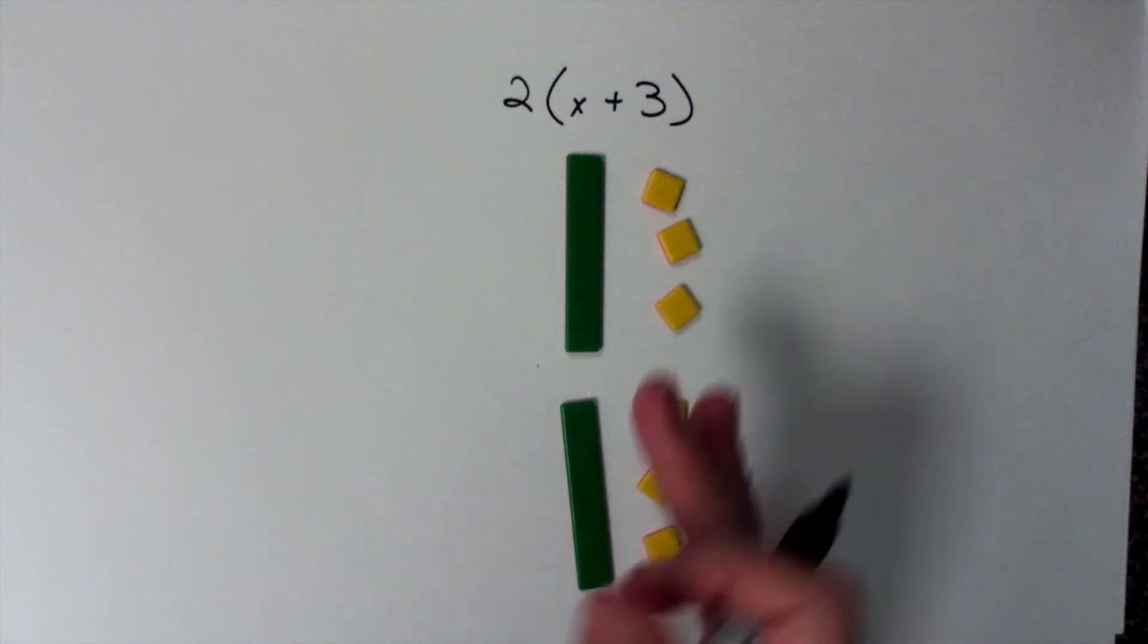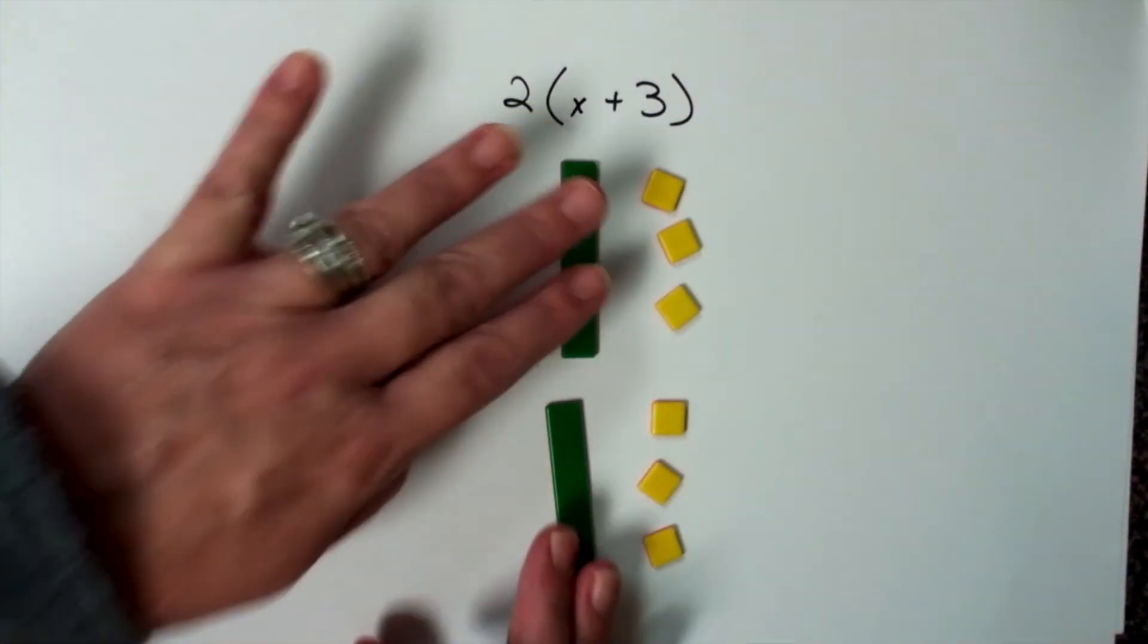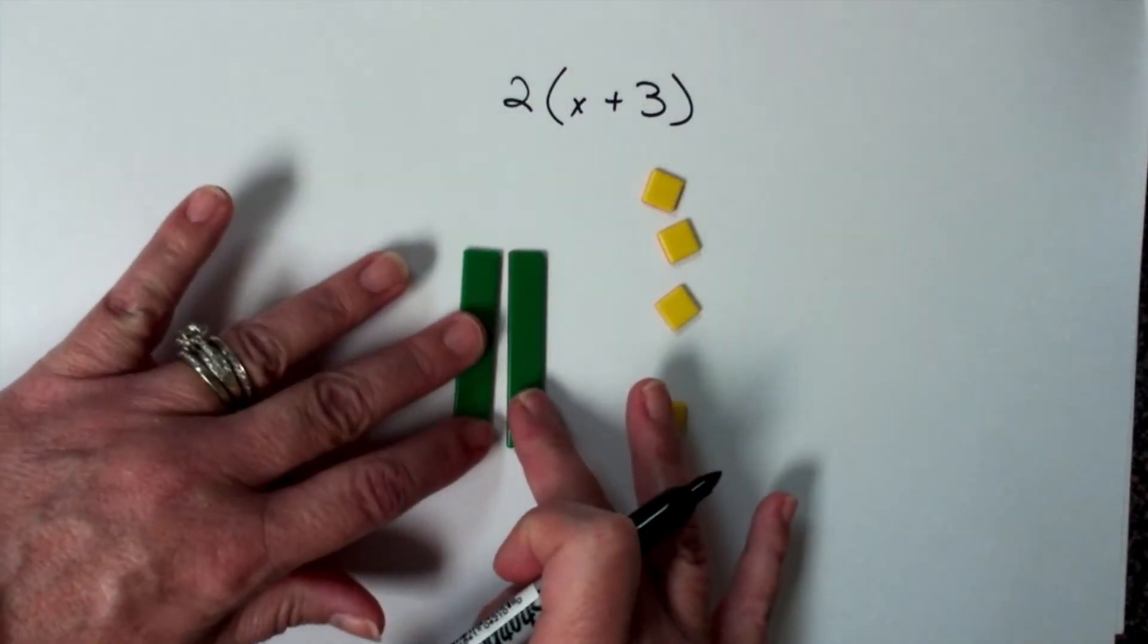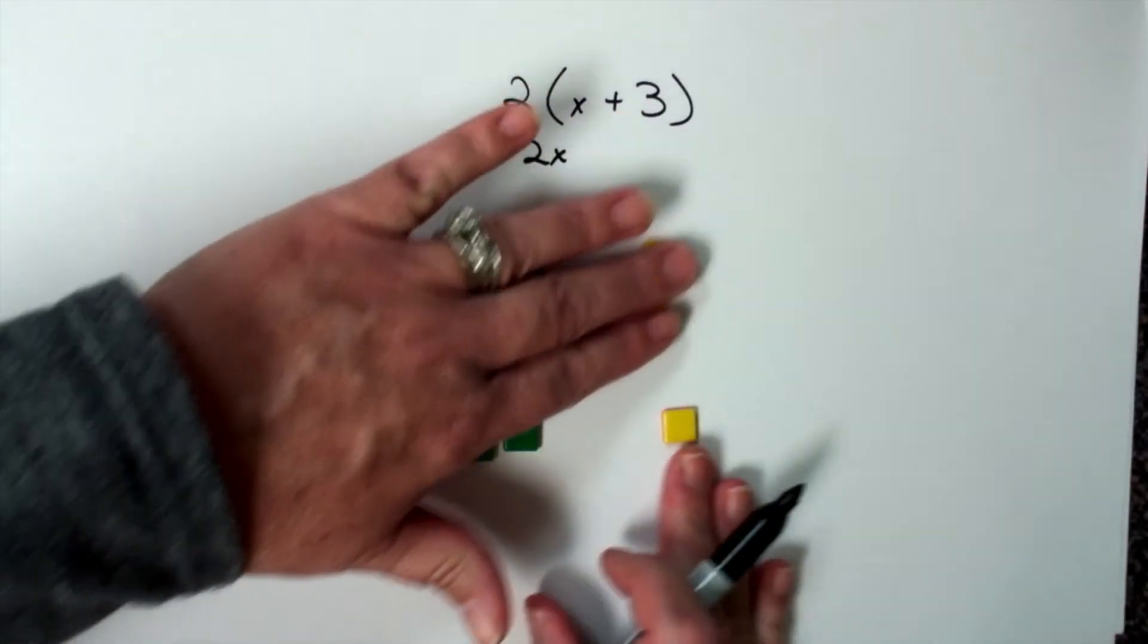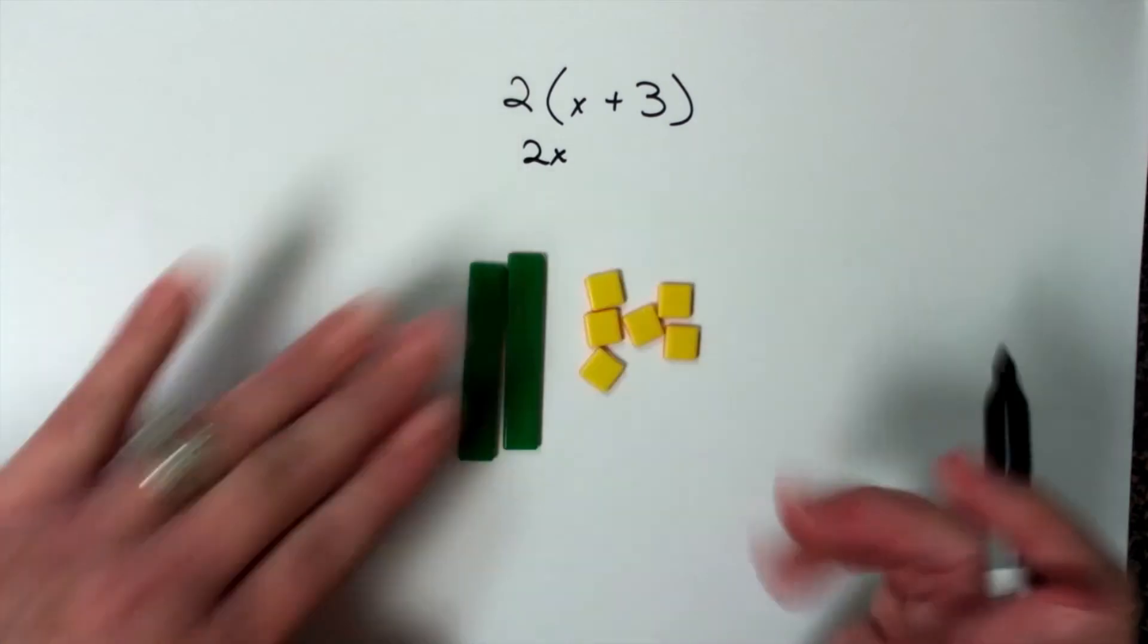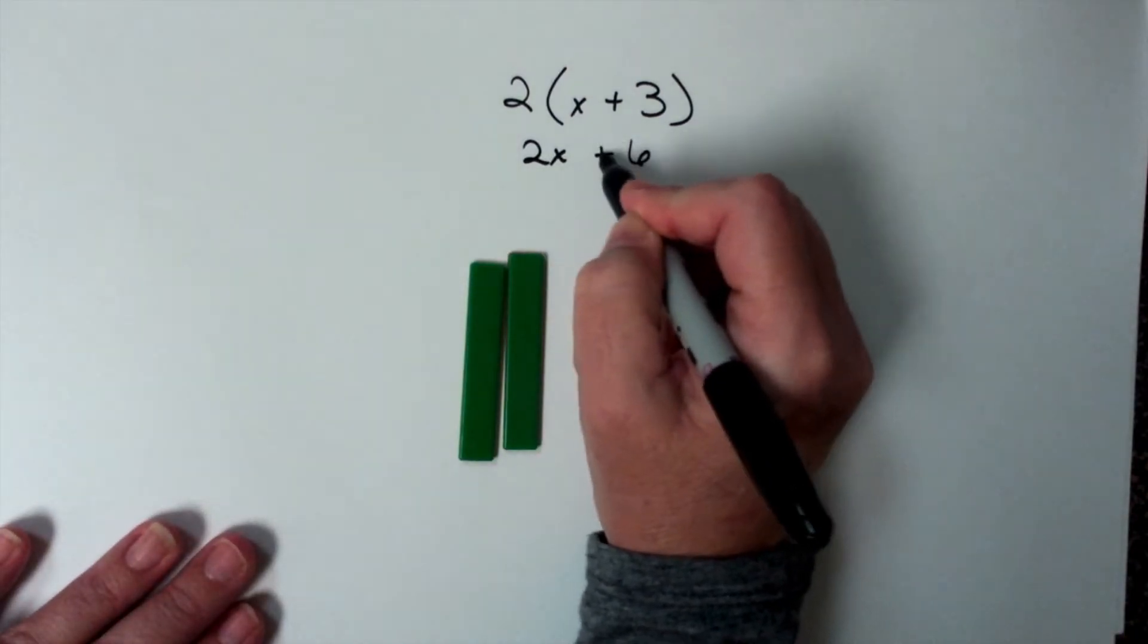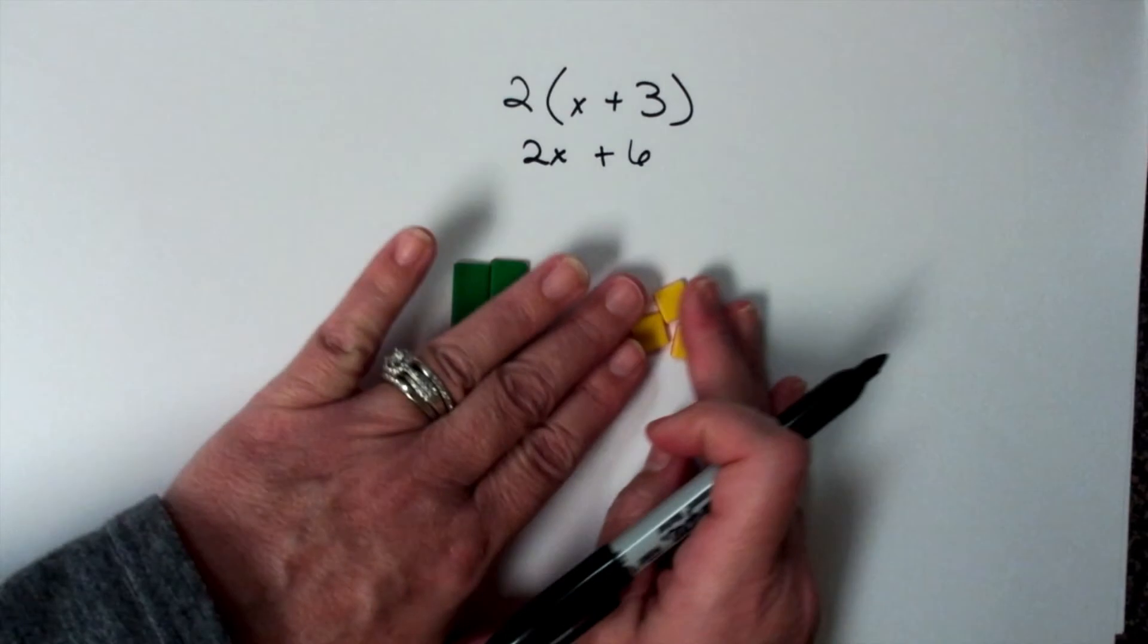Now, if I'm doing the distributive property and they're positive 3, I combine these like terms. I have 2x, and two groups of 3 is 6. Now, these are not alike, so I can't combine them.